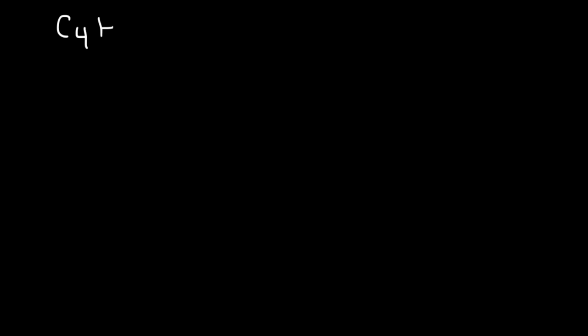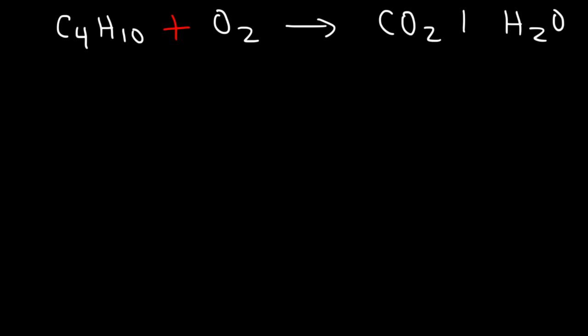Here's a similar example for you to practice on — go ahead and react butane with oxygen gas. Take a minute to try this, because the best way to learn is through practice, and that's how you can master this topic. The products, as always, will be CO₂ and H₂O. Follow the same three steps: balance carbon first, then hydrogen, then save oxygen for last since it's a pure element on the left side. If you get an odd number of oxygens on the right, balance it as a fraction and then multiply everything by two.